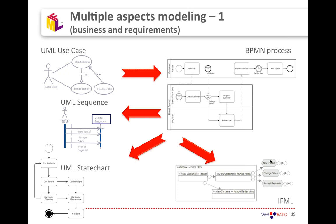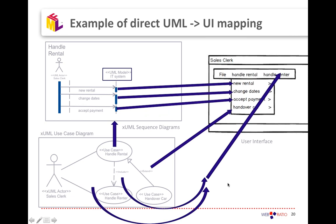Now we're going to see how we can connect these things and how they can collaborate for a better description of the system. Before IFML, you could cover your system design and business design without UI design; now with IFML you can cover the UI part as well. Imagine you had no IFML — the kind of relation you could build between different models of your system would be something like: you have a use case, say handle rental of a car, which could be mapped to a sequence diagram describing the steps for renting a car, but from there to the UI there was still a big gap.